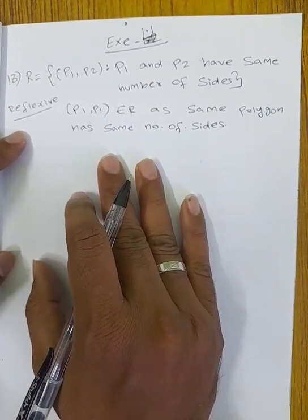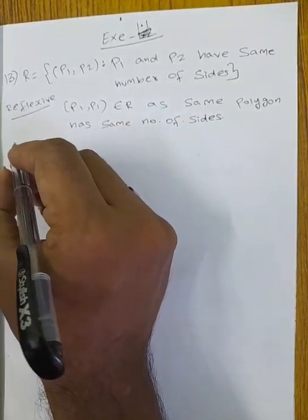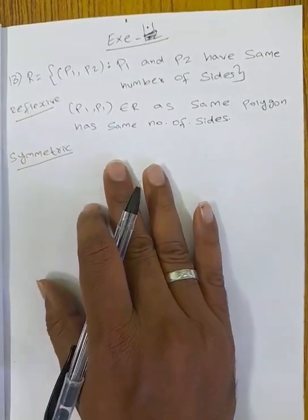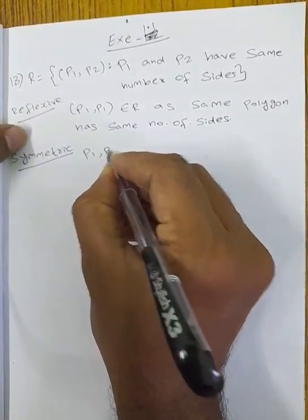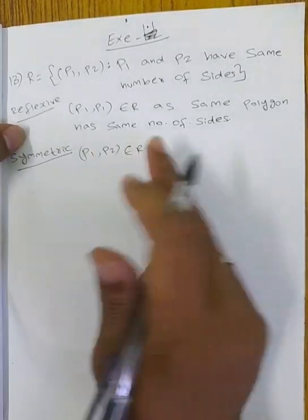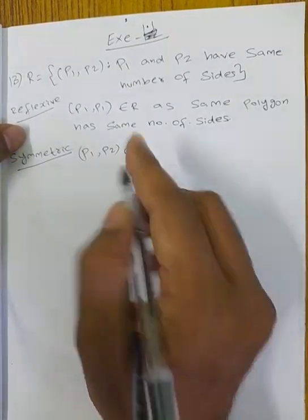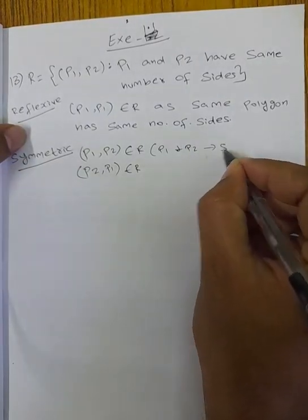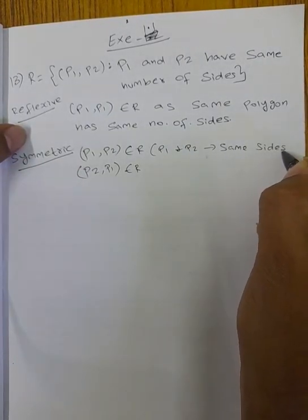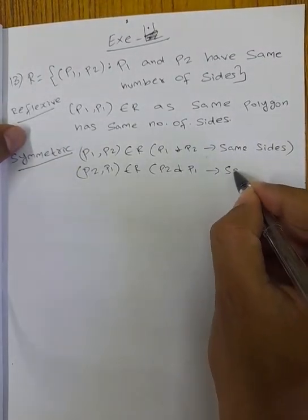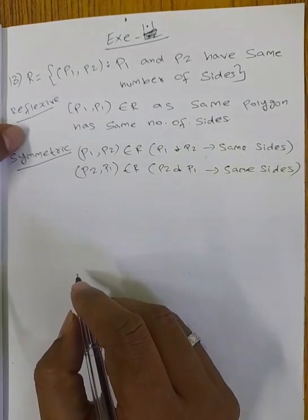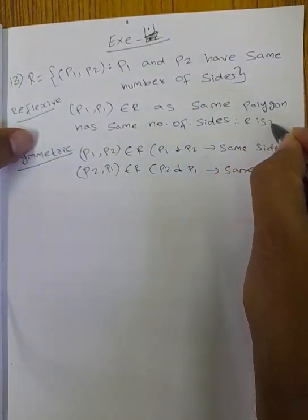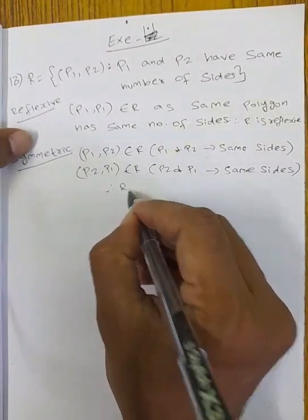Next, symmetry. The condition is: if (A, B) belongs to R, then (B, A) belongs to R. So if P1 and P2 are two polygons and (P1, P2) belongs to R, then P1 and P2 have the same number of sides. Therefore P2 and P1 also have the same number of sides, so R is symmetric.